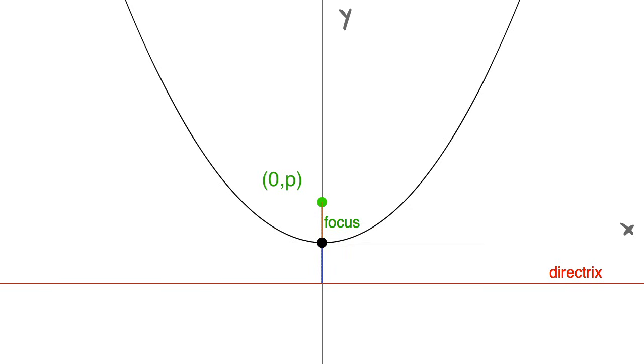Therefore, it has the coordinate (0,p). Since both of these lines have the same length, then this point must have the coordinate (x,-p).